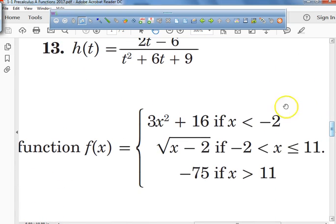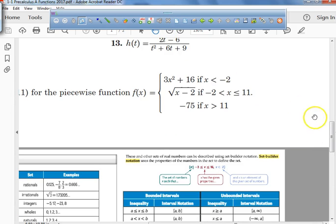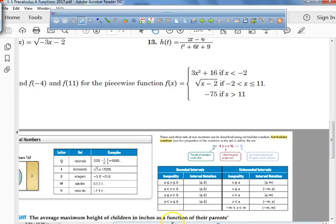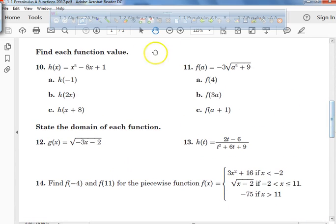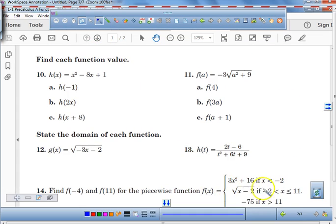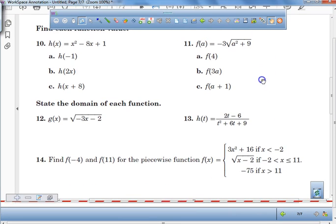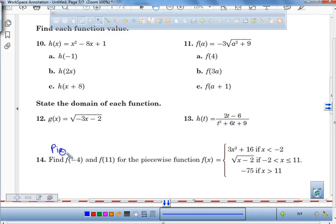Now if I go too fast and you don't see what I did, just let me know and I can go back. What I need you to do right now is I need you guys to put number 14 into your journal, and what I'd like you to do is I would like you guys to title it piecewise functions.